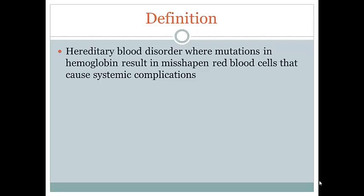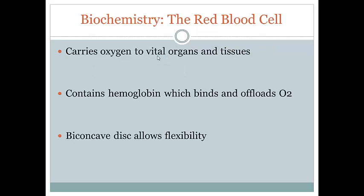A good place to start is the definition of sickle cell anemia, which is that it is a hereditary blood disorder where mutations in the protein hemoglobin result in misshapen red blood cells that can cause whole body systemic complications. We're talking about a blood disorder, so we had better understand the red blood cell. The red blood cell is what carries oxygen to the vital organs and tissues of the body, and it's able to do this because each red blood cell contains a protein called hemoglobin — the oxygen binding component that binds oxygen in the lungs and carries it to the tissues and organs.